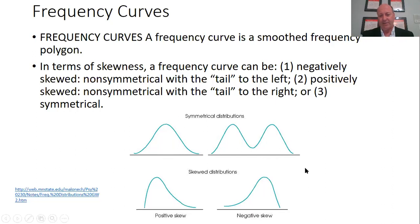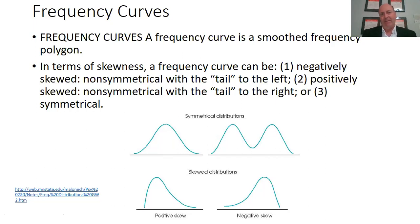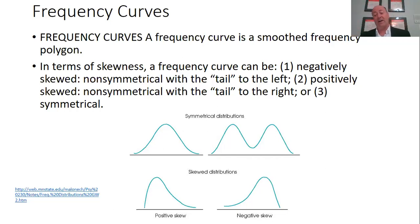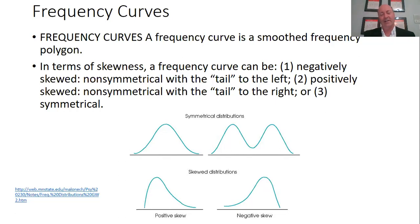Also, not all distributions are symmetrical. You can see here in the skewed distributions that sometimes distributions skew to the right or skew to the left. That's kind of the world we live in. In a theoretical sense, we want every distribution to be symmetrical, but often they're not. We won't spend a lot of time talking about skewed distributions in this class, but just understand that while we really prefer a symmetrical normal distribution, often in the real world you would have a distribution that has a positive or negative skew.